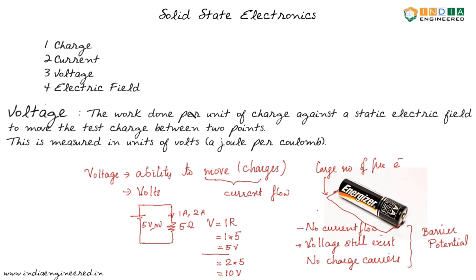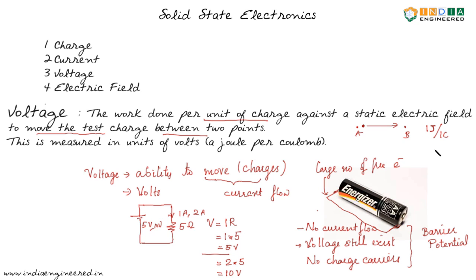Now let us look at the standard definition. Voltage is the work done per unit charge to move a test charge between two points. Suppose you have two points A and B — the electric potential difference between them is the work done to move a unit charge from point A to point B. If one joule of energy is spent per one coulomb of charge, we say there is an electric potential difference, or voltage, of one volt. So the unit of voltage is volts, which equals one joule per coulomb.